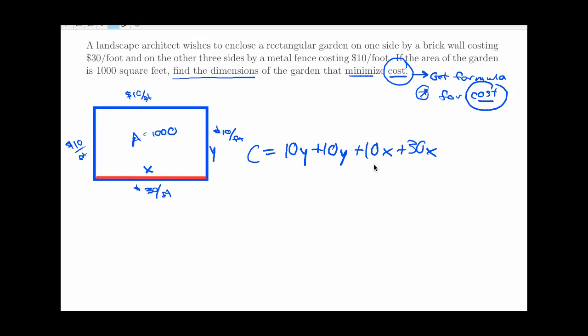In one sense, I've sort of gotten the immediate goal here already solved. I do have a formula for cost. If I know the x and y, then I can plug those in and find out what the cost is in dollars. Now let's clean this up a little bit. So c is, I got 10y plus 10y, that's 20y. And then 10x plus 30x, that's 40x.